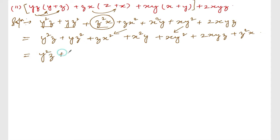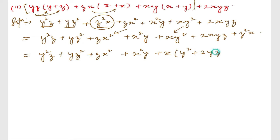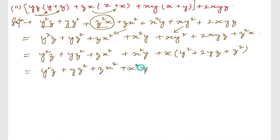From y²z + yz² + zx² + x²y, take x common from the last three terms — wait, actually from these take x common, giving x(y² + 2yz + z²). You can apply the formula a² + 2ab + b² here, so this becomes x(y+z)². We can write yz² as part of x(y+z)².